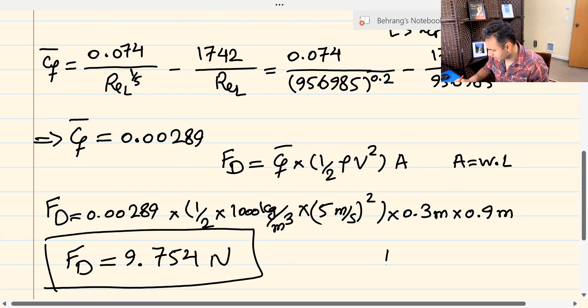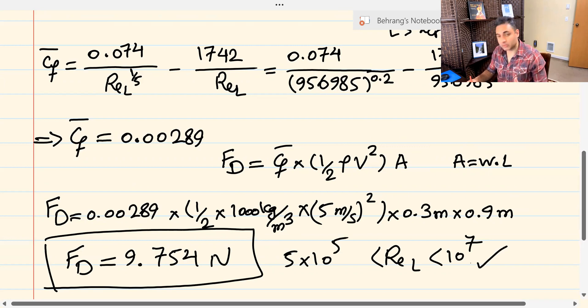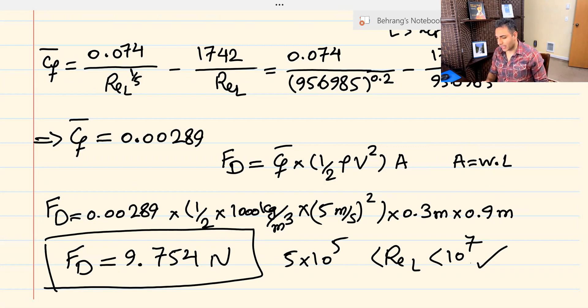It's worth mentioning that Reynolds number was between 10 to the 7th and bigger than 5 times 10 to the 5th. And because the boundary layer was not tripped, and it was a smooth plate, we could fit it into category 2 and accurately calculate the drag force.